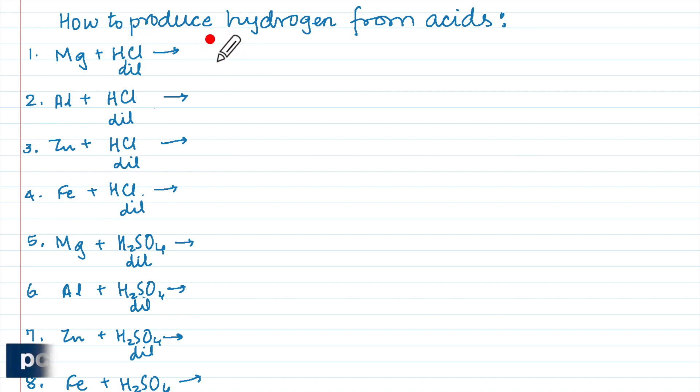Let us look at some of the reactions to produce hydrogen from acids. In order to get hydrogen from the acids we will have to use dilute acids. So you see everywhere we are writing dilute, dilute, dilute, and the first acid we have taken is hydrochloric acid, that is HCl.